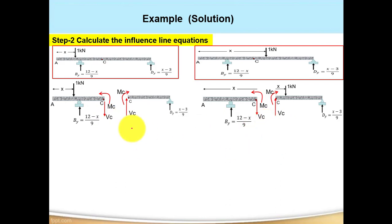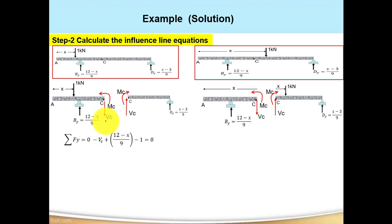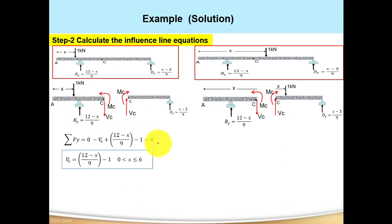This is the free body diagram for the positive sign convention. Now let us calculate V_C for the unit load to the left of C. Assuming all upward forces as positive, sum of forces in the vertical direction equals zero: negative V_C plus B_y, which is (12 minus x) over 9, minus 1 kN equals zero. Therefore V_C equals (12 minus x) over 9 minus 1. This equation is valid for x between 0 and 6.